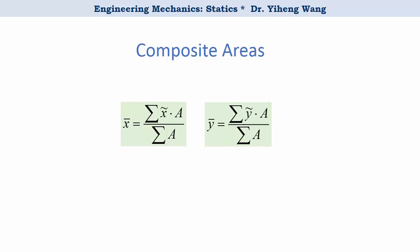You can apply the same approach to the centroid of a composite body, the mass center of a composite body, or the center of gravity of a composite body. Just change the integration sign to summation sign. In this equation, x-tilde and y-tilde represent the centroid coordinates of each component body or area.